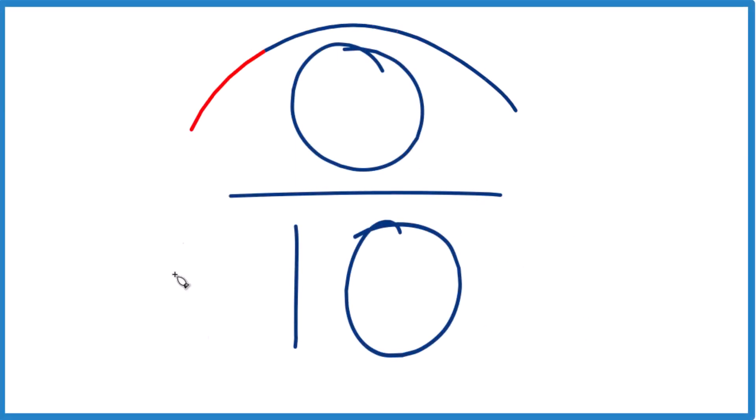Okay, so if you have 0 over 10, 0 divided by 10, what does that equal? How can we simplify this?